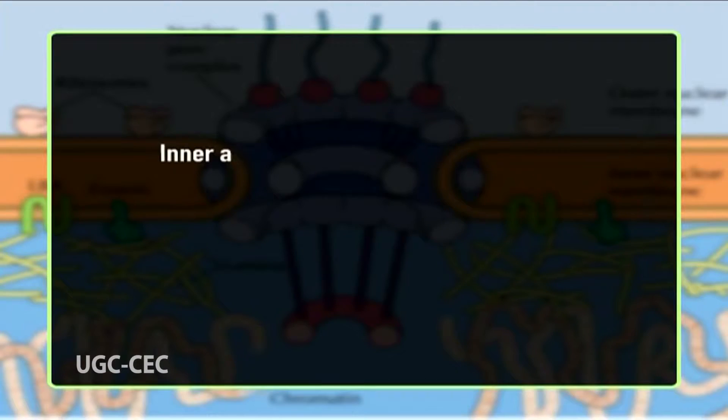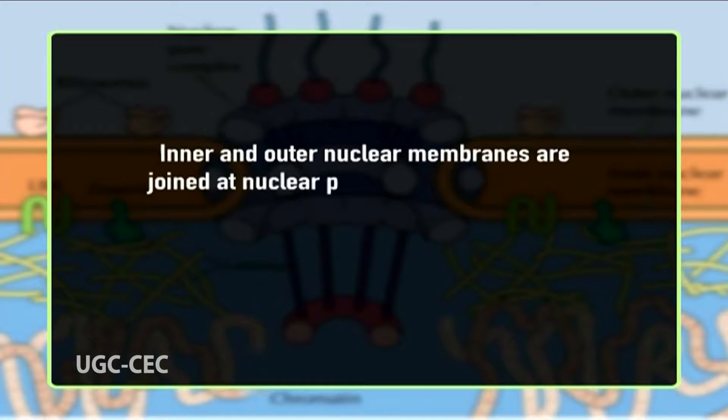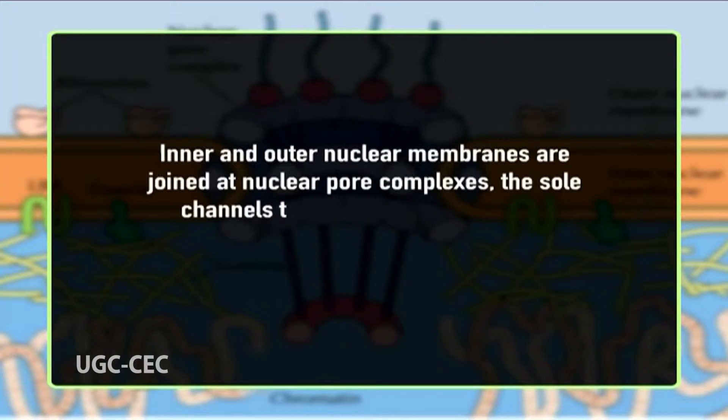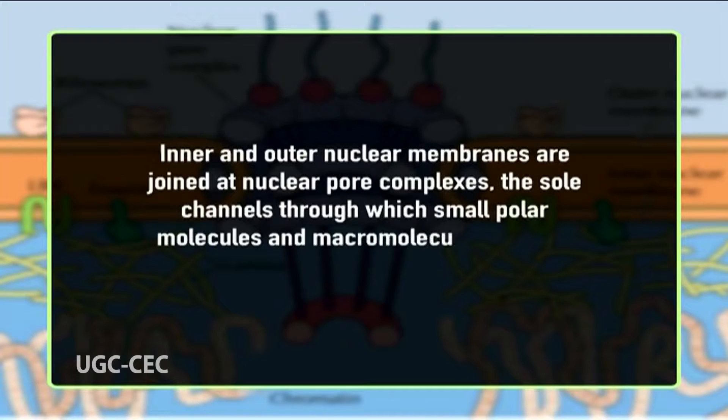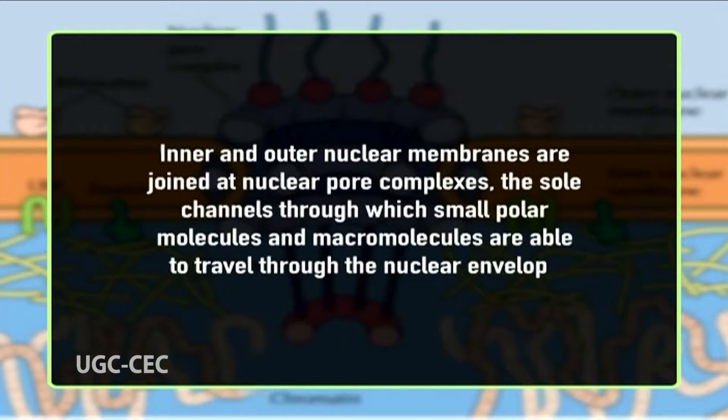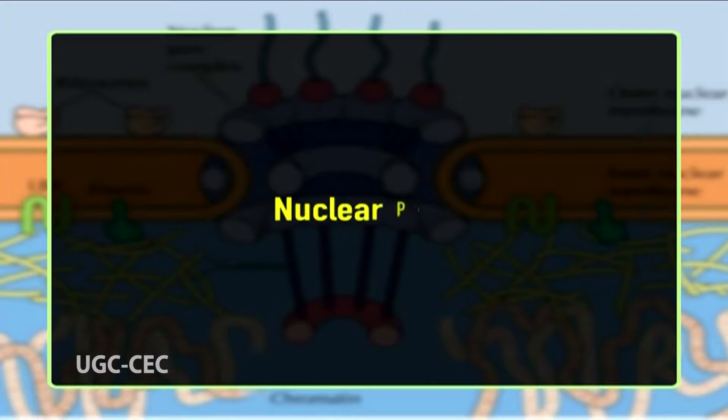In contrast, the inner nuclear membrane carries unique proteins specific to the nucleus. The critical function of the nuclear membranes is to act as a barrier separating the contents of the nucleus from the cytoplasm. The inner and outer nuclear membranes are joined at nuclear pore complexes — the sole channels through which small polar molecules and macromolecules are able to travel through the nuclear envelope. Underlying the inner nuclear membrane is the nuclear lamina, a fibrous meshwork that provides structural support to the nucleus.